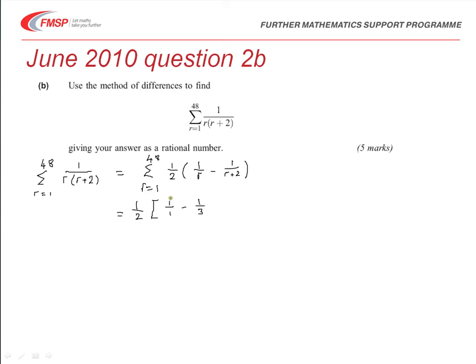And then put r as 2 into this expression, and we'll get 1 over 2, minus 1 over 4. And you can see I've written this underneath, and sort of in between, because I've already been thinking, well, when I put r as 3, the term that I will get will be 1 third, and minus 1 fifth.